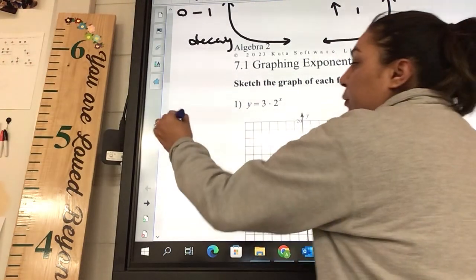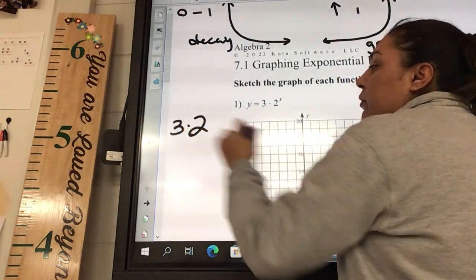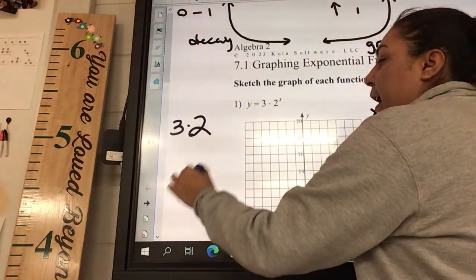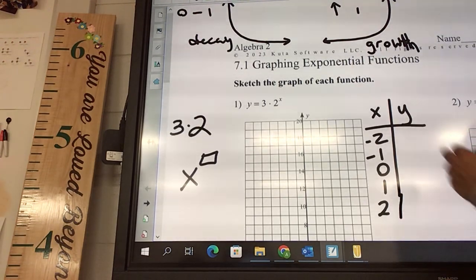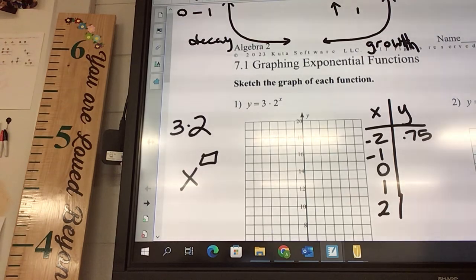All you need to do is type on your calculator. You're going to type in 3 and hit your times button, 2, and then you're looking for the button that looks like X to the blank power button. And you're going to do the first one, so it's going to be to the negative 2. There's an SD button that's close to the buttons and that will change it for you.